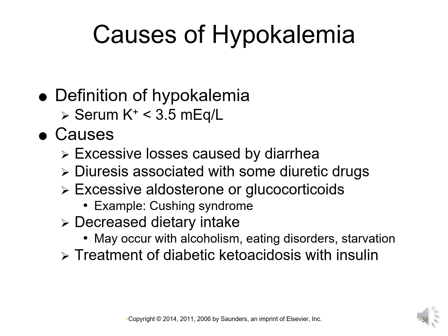Some causes of hypokalemia are losses like diarrhea, diuresis with some diuretic drugs like Lasix, which is a loop diuretic. If a patient is on Lasix or another diuretic that does not retain potassium, it's important to know which foods to recommend to help prevent hypokalemia. If there's excessive aldosterone or glucocorticoids in the body, like in Cushing syndrome, sodium is retained and potassium is excreted. Decreased dietary intake — think alcoholism, eating disorders, starvation — and treatment of DKA with insulin are also causes. Insulin lowers potassium, and giving large amounts of insulin to treat DKA can also cause hypokalemia.